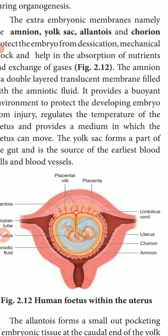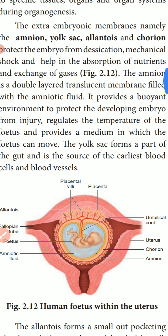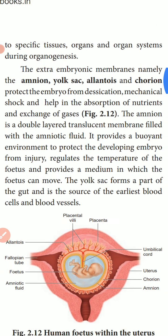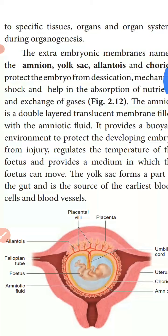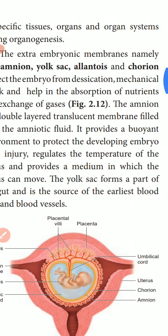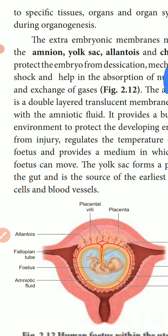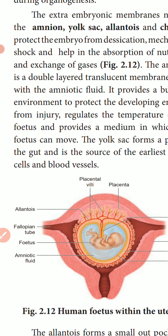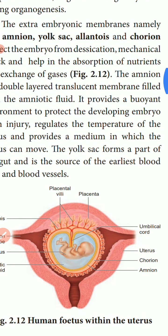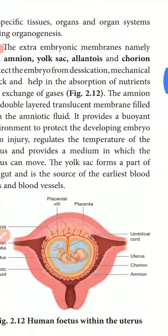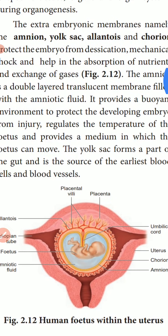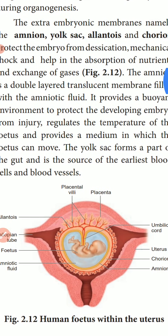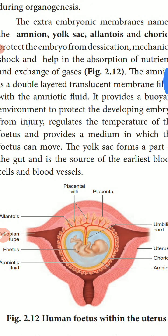The extra-embryonic membranes are formed. They are: Amnion, Yolk sac, Allantois, and Chorion. We will see each of their functions. The functions of Amnion: it is a double-layered translucent membrane filled with amniotic fluid.